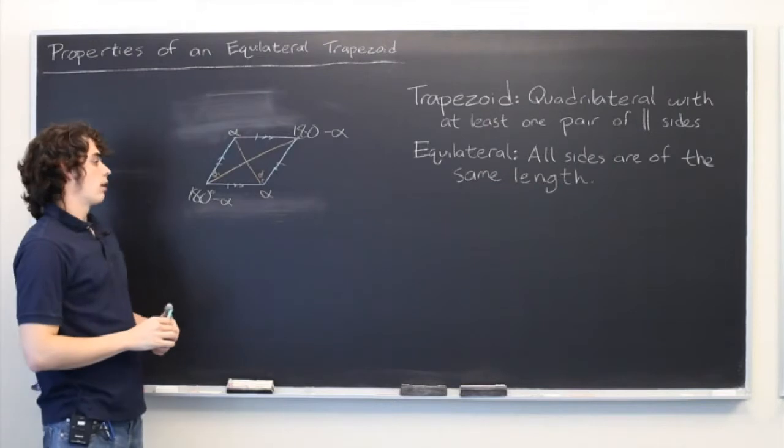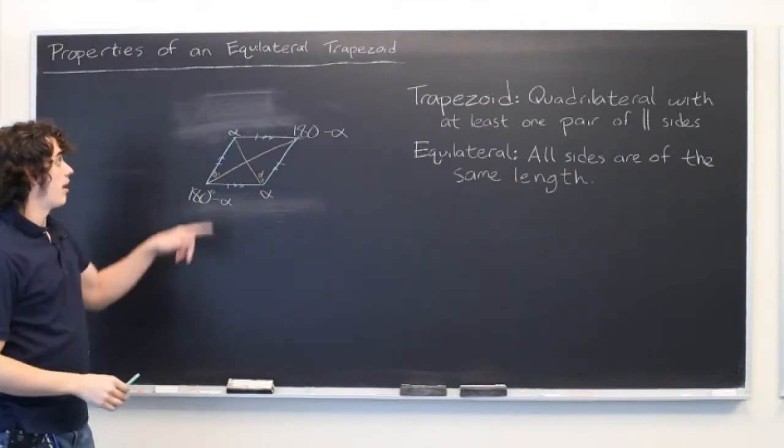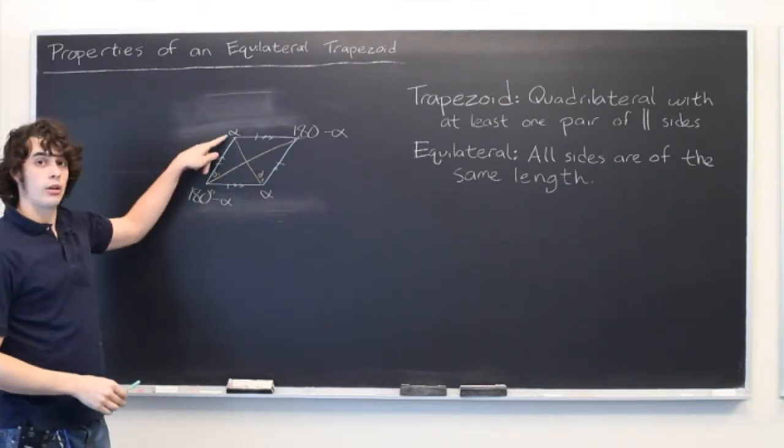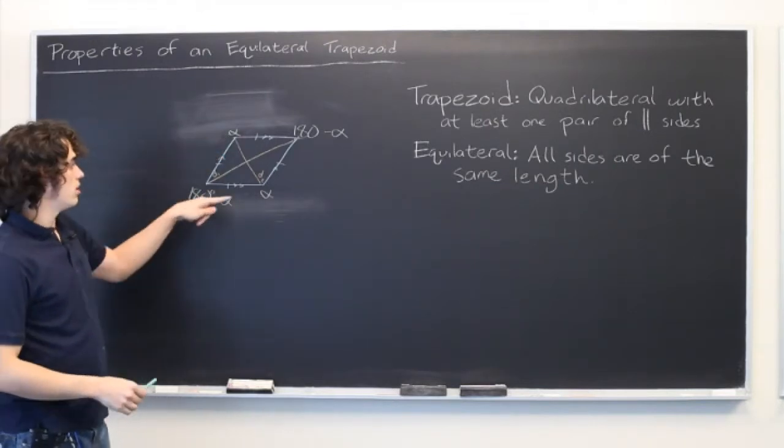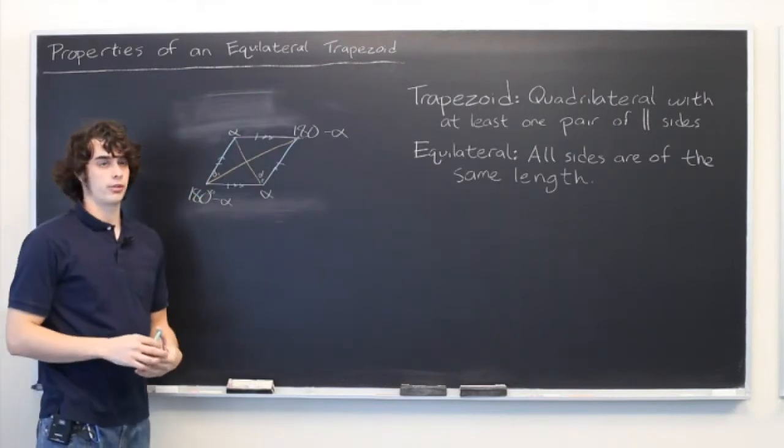So one of the cool properties of an equilateral trapezoid is that from any one angle, you can easily determine all three of the other angles.